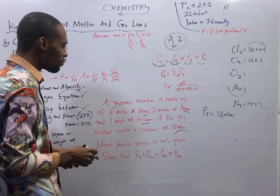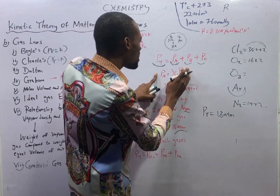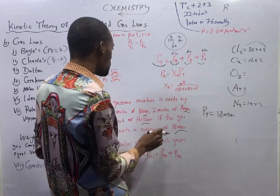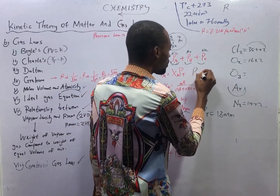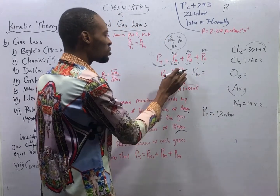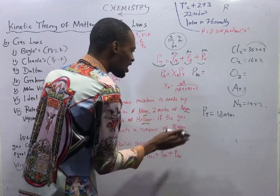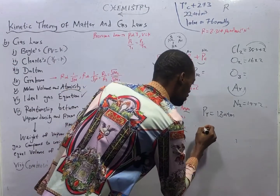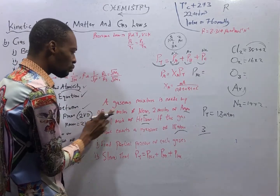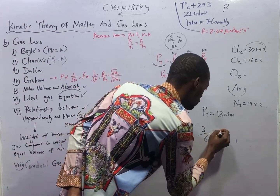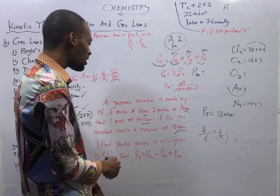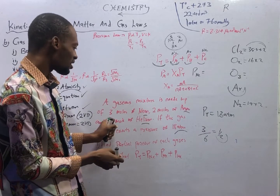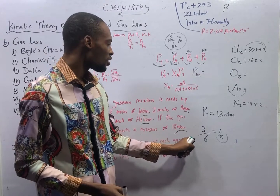The partial pressure of Neon equals the mole fraction of Neon times the total pressure. The mole fraction of Neon is the number of moles of Neon over the total number of moles: 3 over (3 + 2 + 1), which is 3 over 6, equal to 1/2. So the partial pressure of Neon is 1/2 times 18.